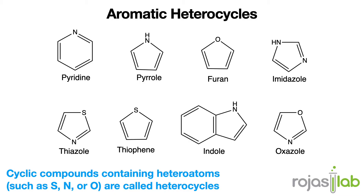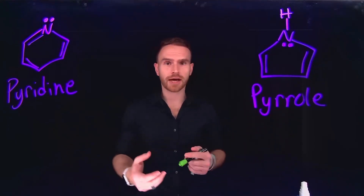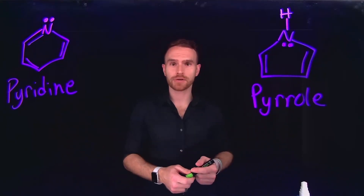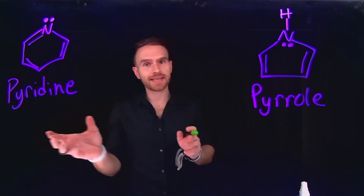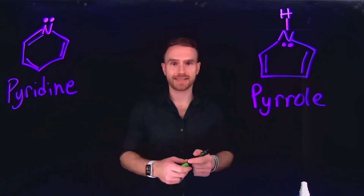Now let's explore the intriguing world of heteroaromatic compounds. Unlike traditional aromatic compounds composed solely of carbon atoms, heteroaromatic compounds contain one or more heteroatoms such as nitrogen, oxygen, or sulfur within the aromatic ring. These heteroatoms impart unique reactivity and properties to the aromatic system. Pyridine and pyrrole are two different types of heteroaromatic compounds that exist because they satisfy all of the rules required for aromaticity.